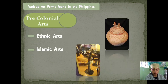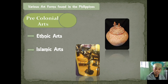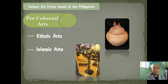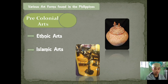Under pre-colonial arts, we have ethnic arts and Islamic arts. This means that even before the colonizers arrived, our country already had its own arts. For example, we can see the Manunggul Jar in Palawan, where bones were placed inside — it was used as a coffin for the deceased. Our Muslim brothers in Mindanao also have the sarimanok under Islamic arts.